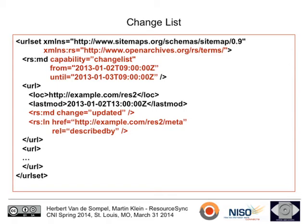We introduced two new elements: md (metadata) and ln (link, familiar to those in the UNIX environment). The link element allows us to reference related resources. For example, we can express that the resource described by the URI in the loc element is described by another resource — the metadata about that resource. Using the link relation type 'described-by', we connect the content resource and the metadata resource. The inverse relation 'describes' would be used if your loc pointed to the metadata and your link pointed to the actual content resource.